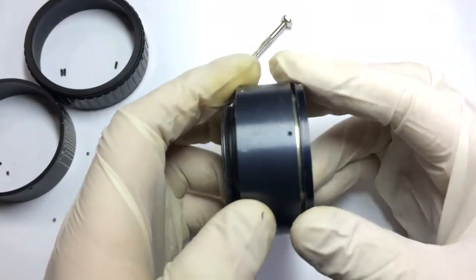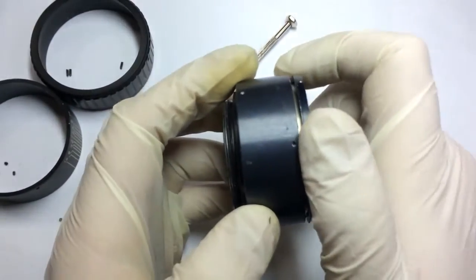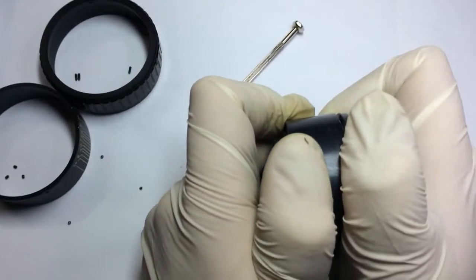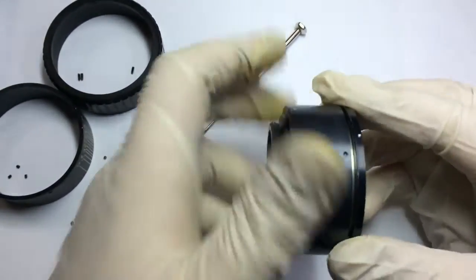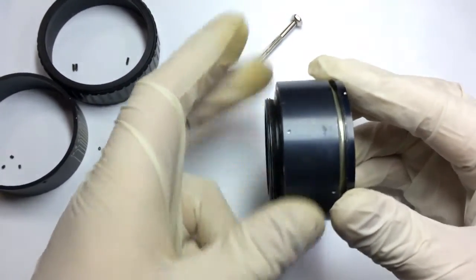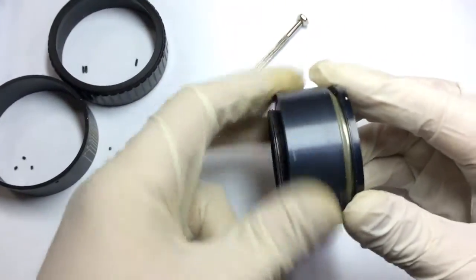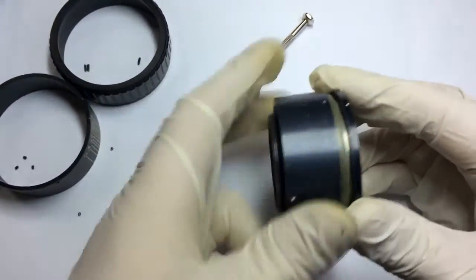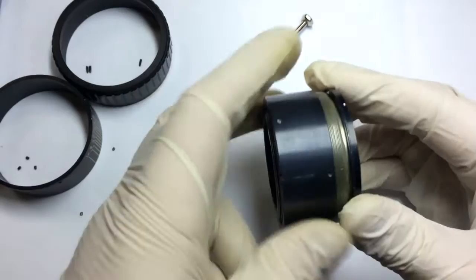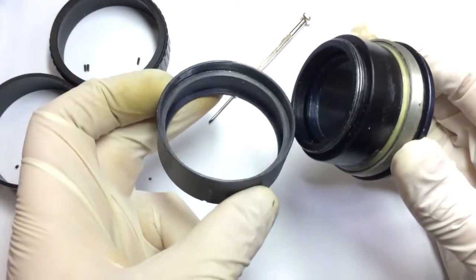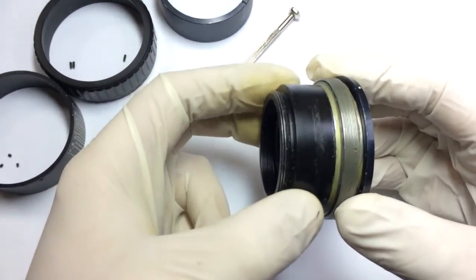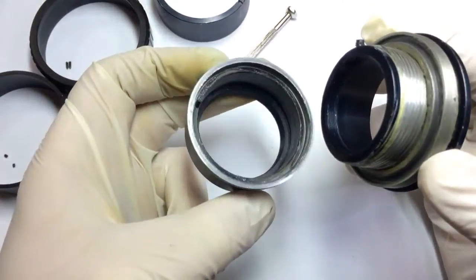Then you take this part with your right hand for example and this ring with left hand and you just applying a force, you turn it to the left. And as there is a thread inside, it comes out. Then you can easily remove by pulling. You can easily remove the rear side.